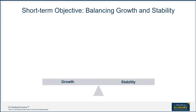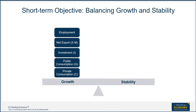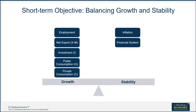The short-term objective of economic policy makers is to balance growth and stability. They can stimulate growth through these four engines on the expenditure side: private consumption, public consumption, investment, and net export. Increasing employment is usually the immediate target for short-term growth stimulus policies. On the other side, policy makers have to watch out for inflation and other macroeconomic stability issues, such as the financial system's health, fiscal health, balance of payment, and the exchange rate.